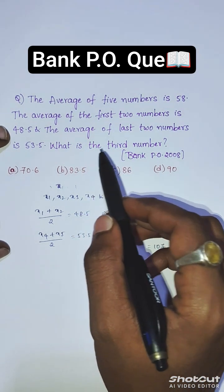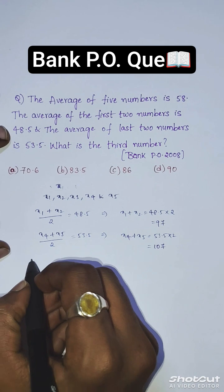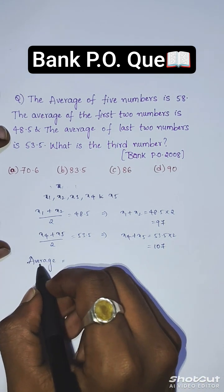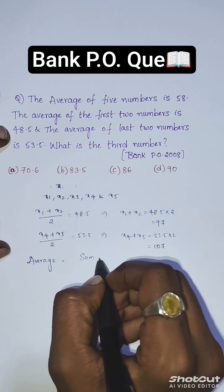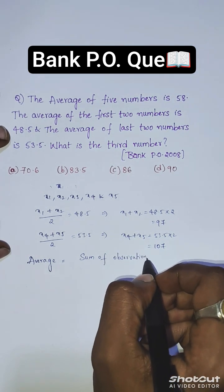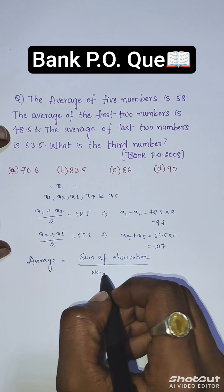We are asked to find the third number. From the formula of average, we can say that average equals sum of observations divided by number of observations.